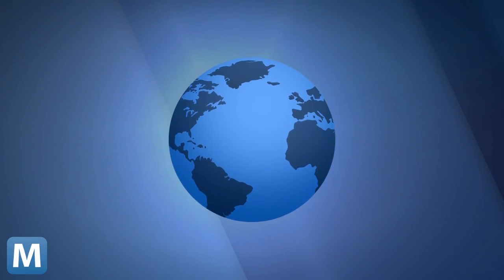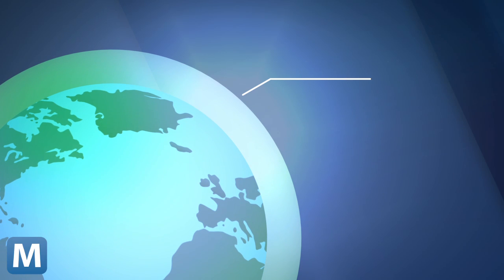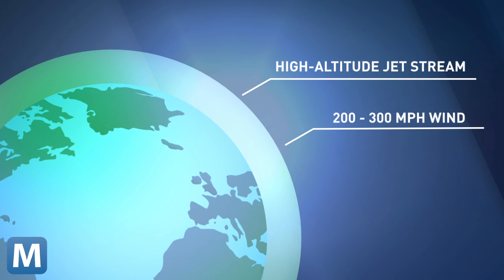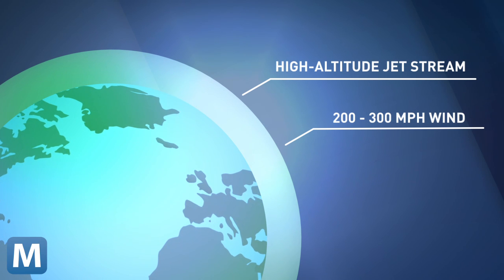The high-altitude jet stream is located about 60 to 65 miles above the Earth's surface. It reaches speeds of 200 to 300 miles per hour and often coincides with areas containing strong electrical currents. And that electricity can affect our satellite and radio communications.